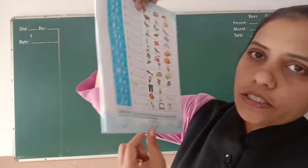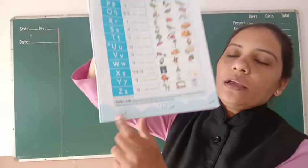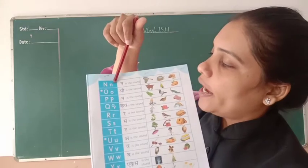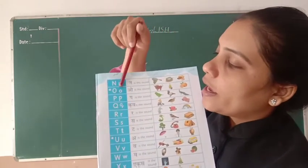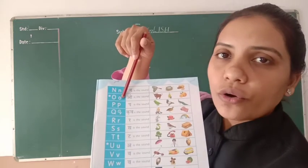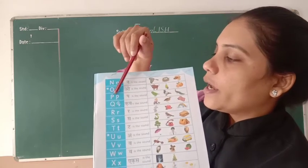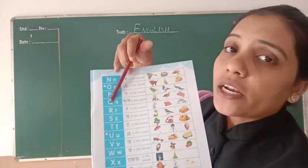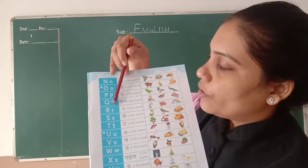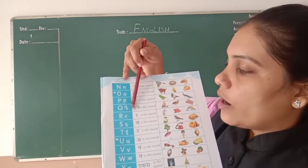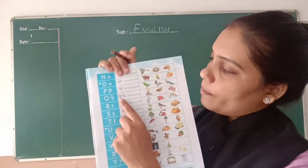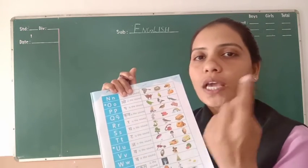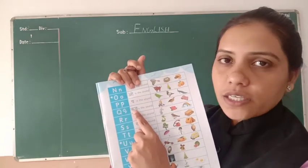Page number 3 — okay, yahan pe dekho. Capital N and small N — Na is the sound. Capital O and small O — O is the sound. Capital P and small P — Pa is the sound. Capital Q and small Q — okay, dekho yahan pe, Kwa hai na. Yeh thoda difficult lagega aapko, par bolte hain koi bhi Q related spelling loge, ya to koi bhi word loge, tab aap bolke speak karna, to Kwa aisa sound aayega.